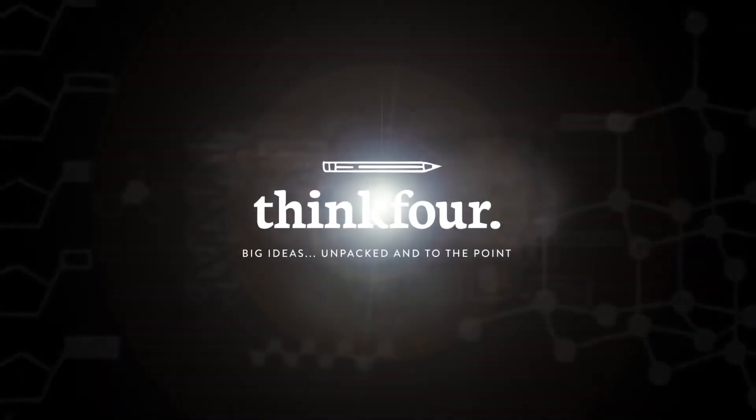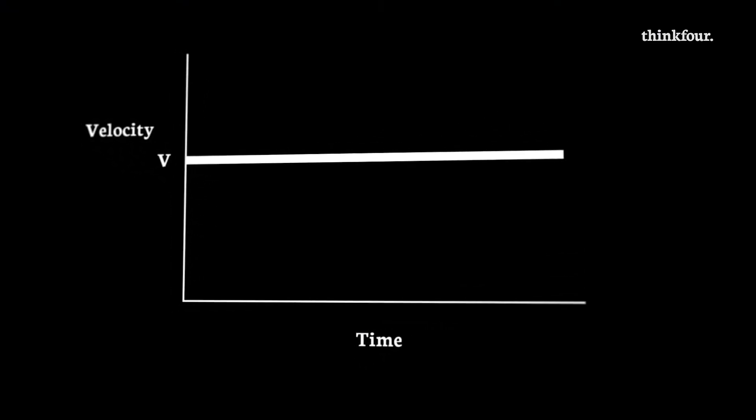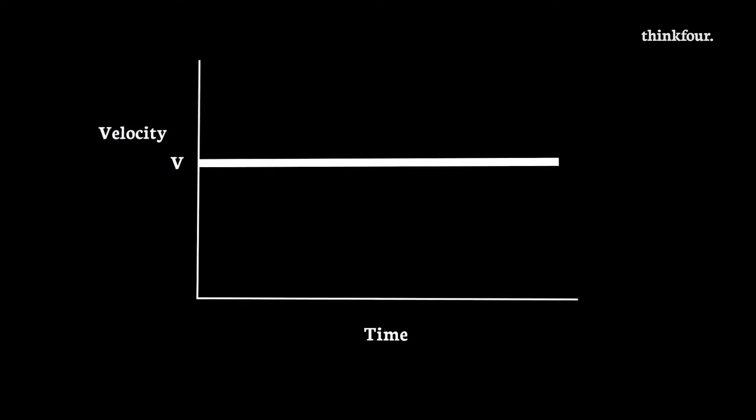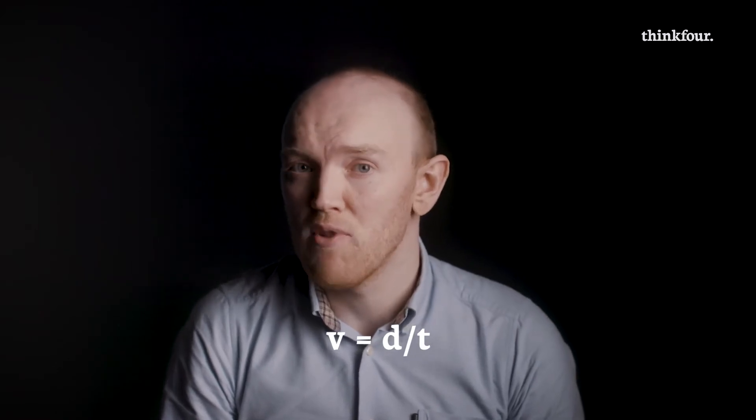Let's see how physics makes sense of this. This is THINK4. When we consider the horizontal motion of a projectile, we assume there is no air resistance and after we release the ball, there are no forces acting on the ball, so it continues at a constant speed. Denoted by this rather boring graph, and because the graph is so boring, we can use this simple equation — V equals D over T — to do calculations in the horizontal direction.